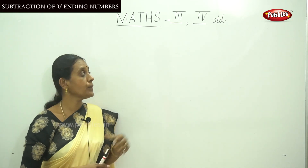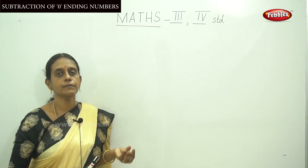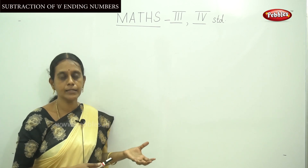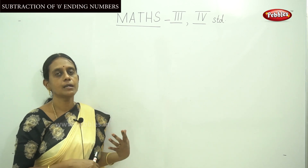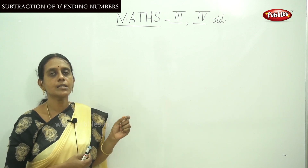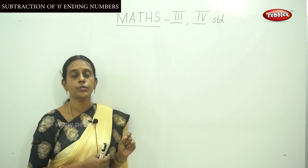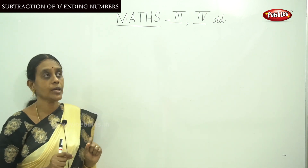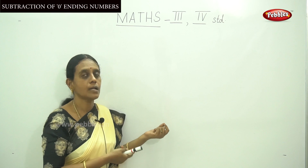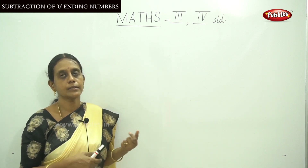Dear children, now we are going to do subtraction of zero-ending numbers — that is tens, hundreds, and thousands — from the minuend. This is a short way to write down the answer without paper and pencil. You can calculate this in your mind; it is like mental maths.